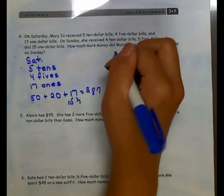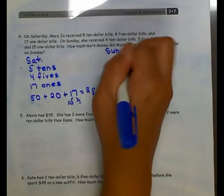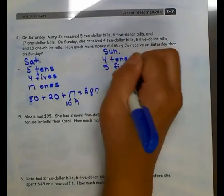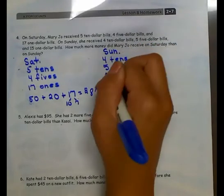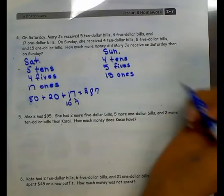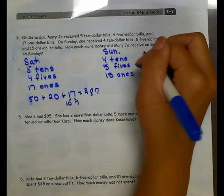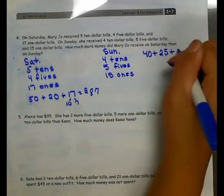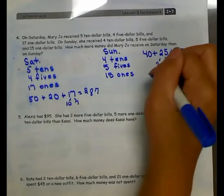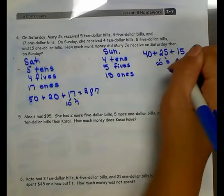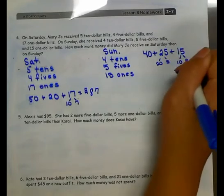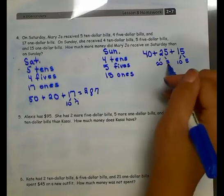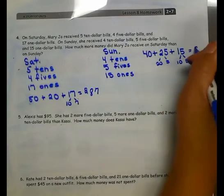On Sunday, she received 4 $10s, 5 $5s, and 15 $1s. To find the total, I'm going to add: 4 $10s gives me 40, plus 5 $5s gives me 25, plus 15 $1s gives me 15. Decompose my 25 into 20 and 5, and 15 into 10 and 5: 40 plus 20 is 60, plus 10 more is 70, plus 5 is 75, plus 5 more equals $80.